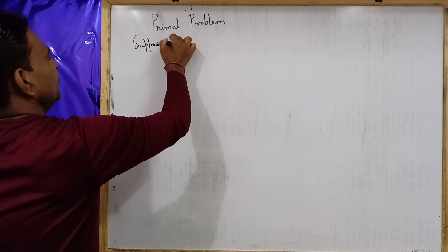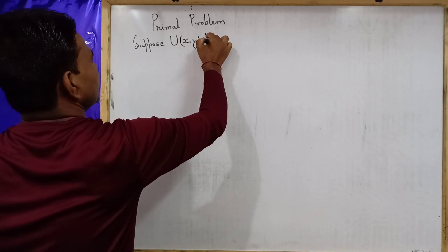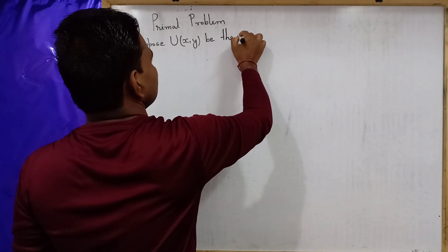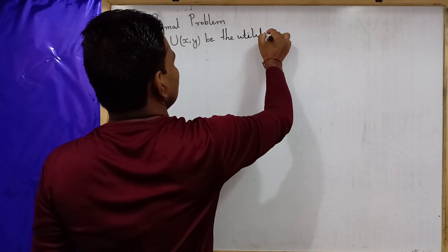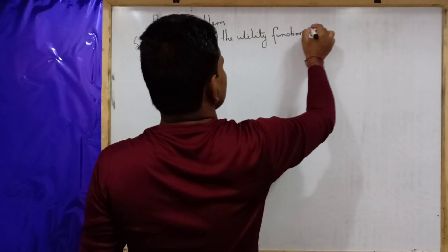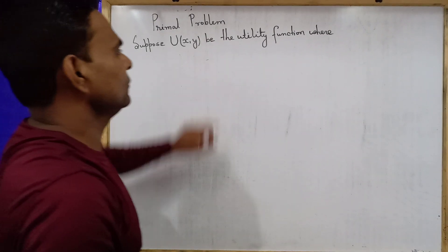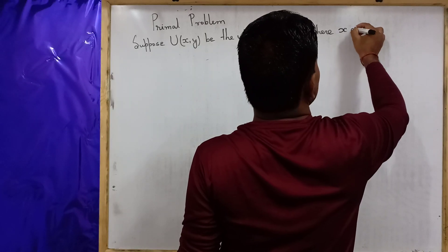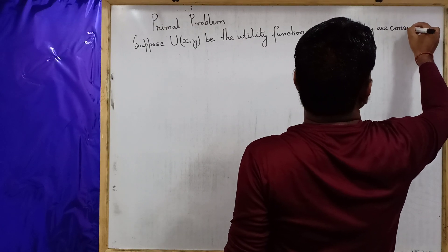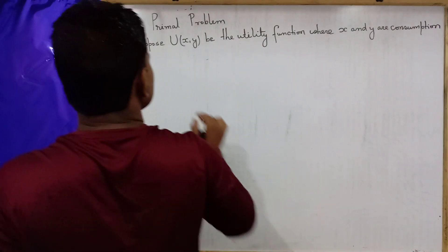Suppose U is a function of X and Y — the Utility Function — where X and Y are consumption goods.